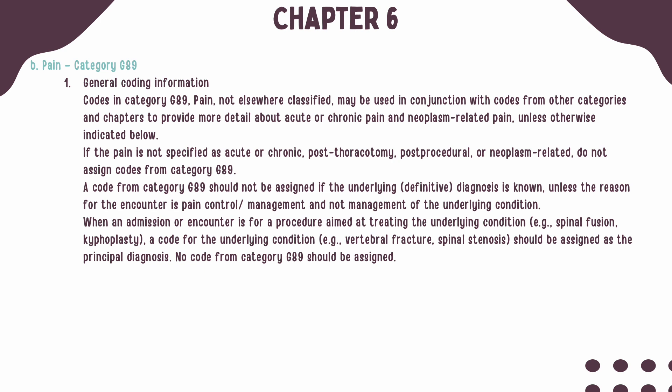Codes in Category G89 can be used in conjunction with codes from other chapters, as long as they provide more detail about whether the pain is acute or chronic or neoplasm-related, with a few exceptions. First, if the pain is not specified as acute or chronic, post-thoracotomy, post-procedural, or neoplasm-related, then a code from Category G89 should not be assigned.